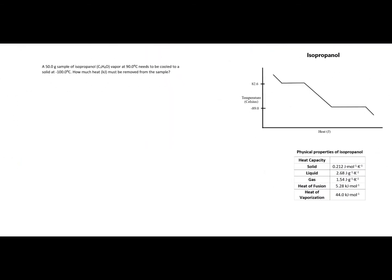Here is the page with our problem and it reads: A 50 gram sample of isopropanol vapor at 90 degrees Celsius needs to be cooled to a solid at negative 100 degrees Celsius. How much heat in kilojoules must be removed from the sample?